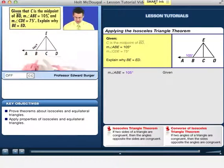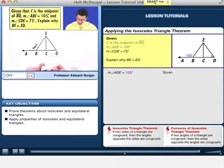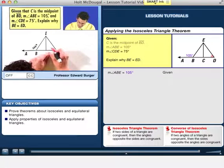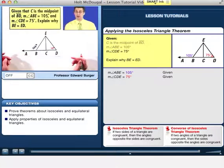And we know that the measure of angle CDE, so that little angle right there, is 75. So this is 75 degrees. So that's pretty neat. Write that right in there. And that's all we know.